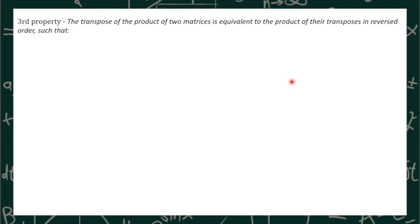For our last property, the transpose of the product of two matrices is equivalent to the product of their transposes in reversed order, such that the transpose of quantity AB equals the transpose of B times the transpose of A. Or if we have three matrices, it will become: the transpose of quantity ABC equals the transpose of C times the transpose of B times the transpose of A.